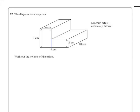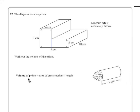Now the volume of a prism is another one of these formulae that you'll be given in the front of your exam booklet. It tells us that the volume of a prism is equal to the area of the cross section multiplied by the length.